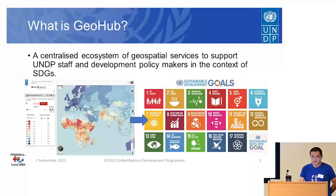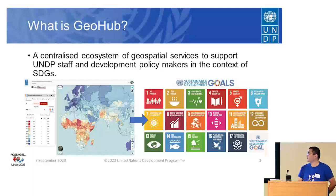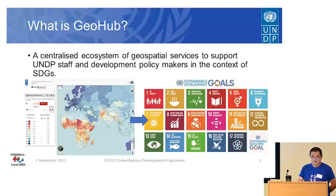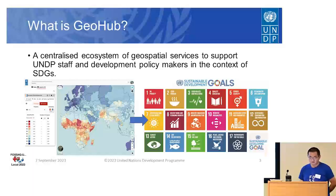UNDP is a United Nations agency helping countries to eliminate poverty and achieve Sustainable Development Goals (SDGs). GeoHub is a centralized ecosystem to support UNDP staff and policy makers to help them visualize and analyze geospatial datasets to achieve SDGs.